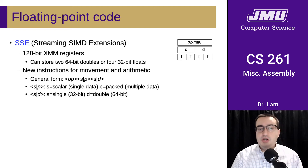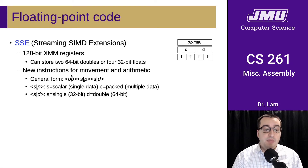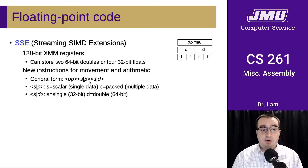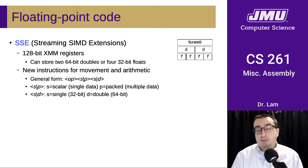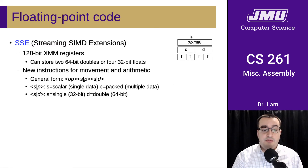There are many new instructions for movement and arithmetic, and their naming scheme is consistent. The general form is the basic operand (add, multiply, etc.) followed by two letters indicating whether it's a vector instruction and the data size. The first letter is S for scalar (single data) or P for packed (vector, multiple pairs). The last letter is S for single precision (32-bit float) or D for double precision (64-bit float).